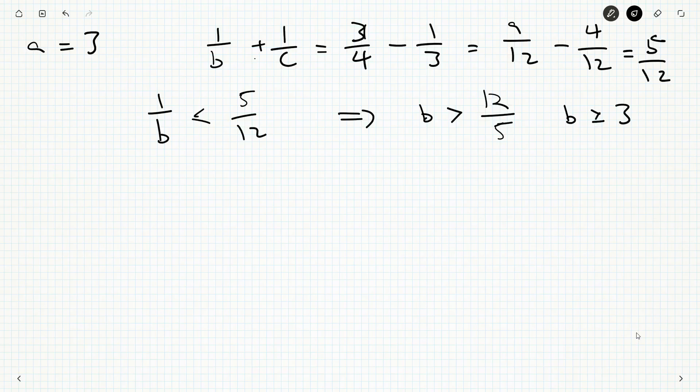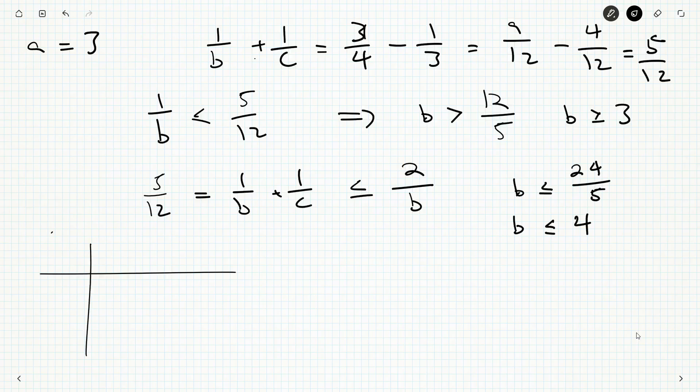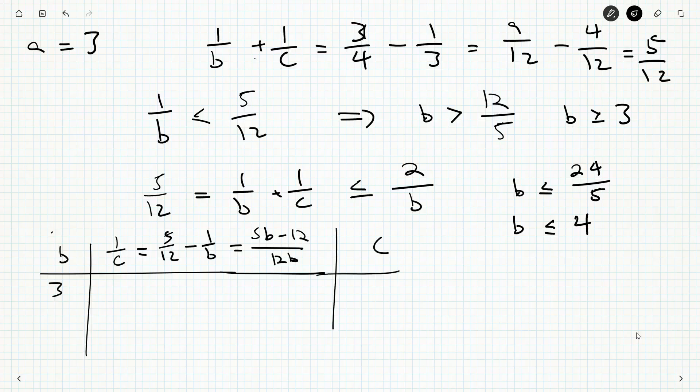1 over B has to be less than 5 twelfths. I'm able to jump into this a little quicker because we already did the A equals 2 cases. And so that tells me B has to be greater than 12 fifths, which is about 2. It's a little more than 2, so B has to be greater than or equal to 3. And if B were 3, then 1 third is 4 twelfths, and that is less than 5 twelfths. What could B be at most? 5 twelfths has got to be 1 over B plus 1 over C, but that has to be less than or equal to 2 over B.